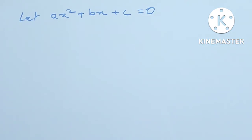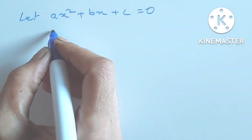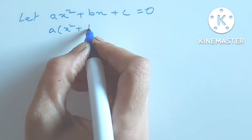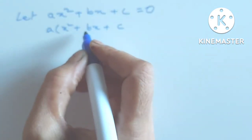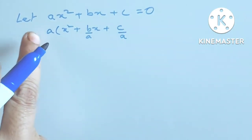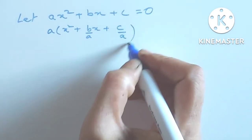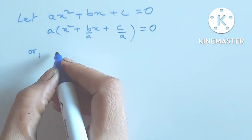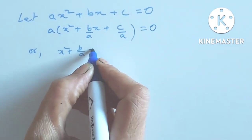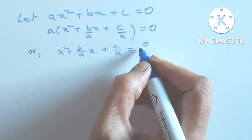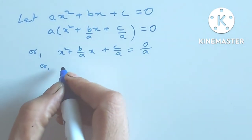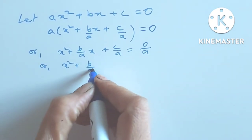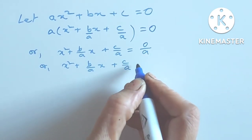By completing the square, we can find the value of x. For that, we have to eliminate the value of a. So we take common a, giving x squared plus B/a x plus C/a, so B by a and C by a. We get x squared plus (B/a)x plus C/a is equal to 0.